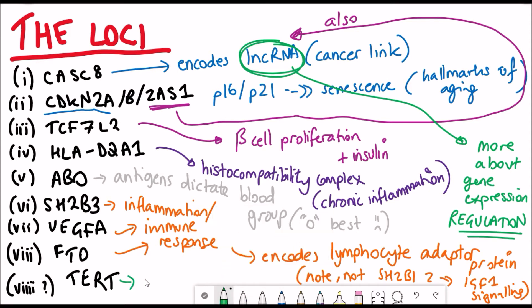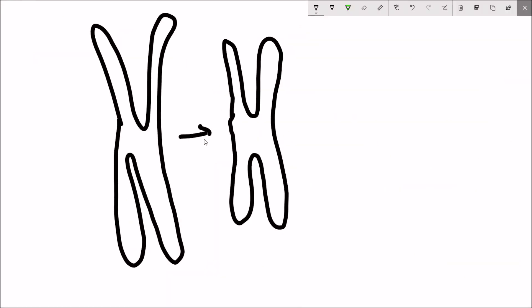And then lastly, we have TERT, which encodes telomerase, which extends telomeres. Again, telomere shortening is a hallmark of aging, which I've explained before.